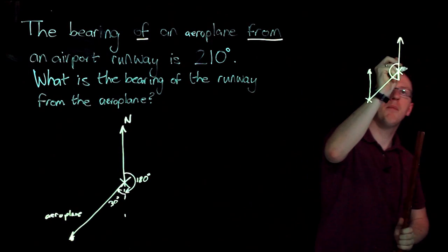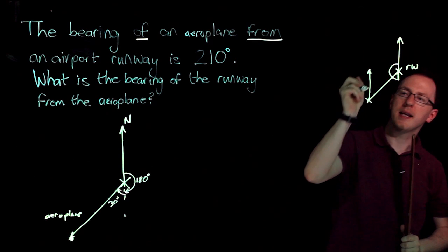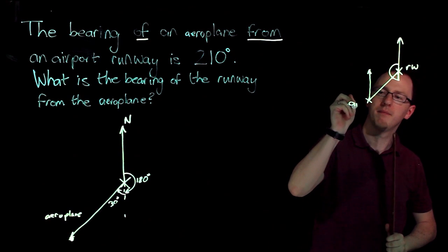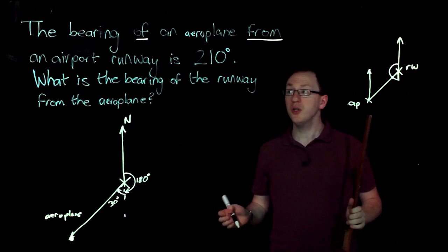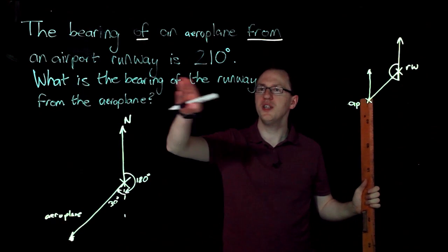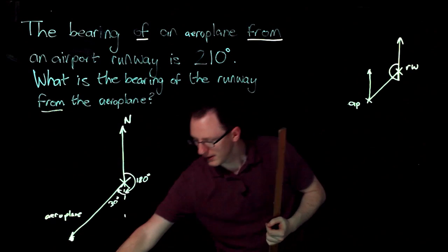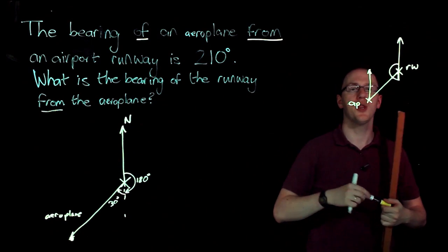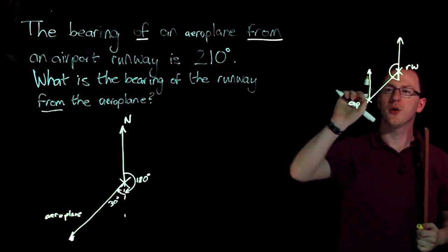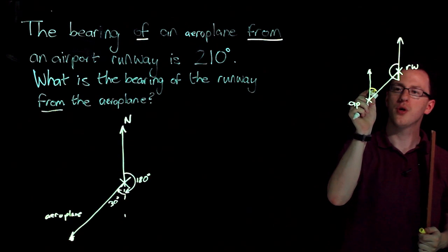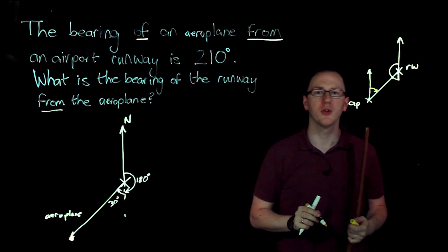So there I have my airport runway and here I have my airplane. And now I can answer the question: what is the bearing of the runway from the airplane? I'm starting at north. I'm facing north and I'm turning toward the airport. So that's the angle I'm going to measure there.